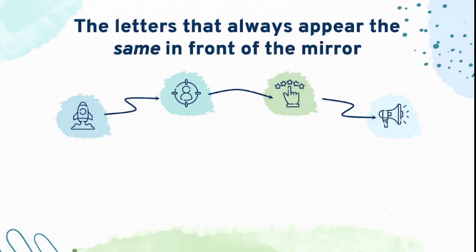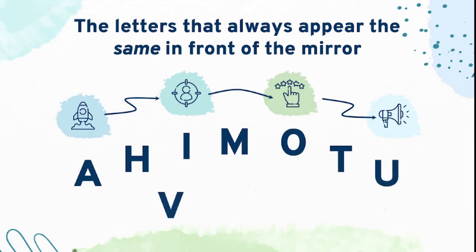The letters that always appear the same in front of the mirror are A, H, I, M, O, T, U, V, W, X, and Y.